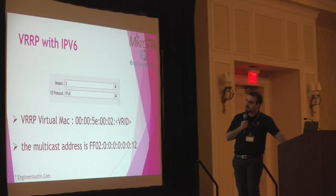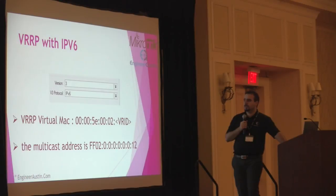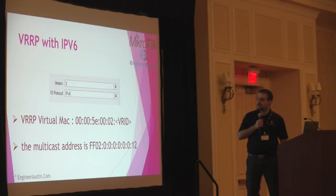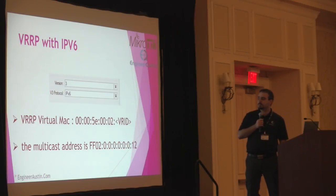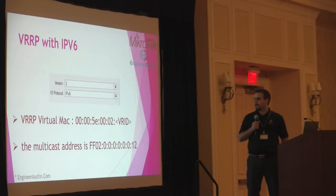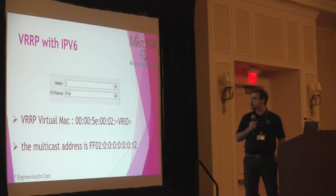For using VRRP with IPv6, we need to set the version to 3 in the configuration, and the VRRP protocol should be set to IPv6. IPv6 uses link-local addresses for communication, and VRRP uses the link-local address for routers to talk to each other.